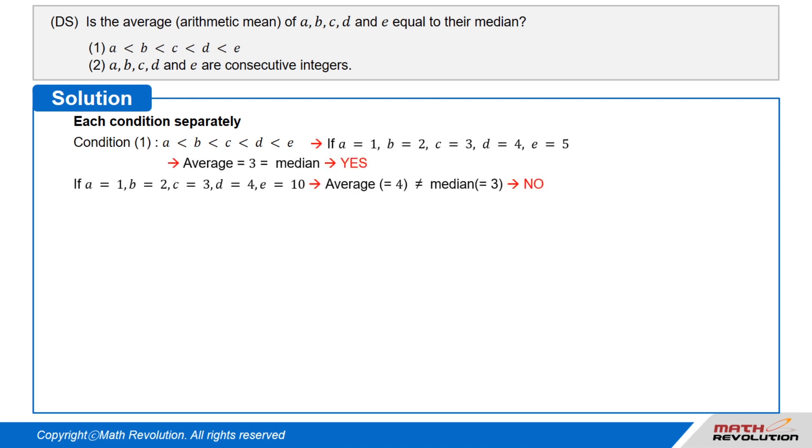If A equals 1, B equals 2, C equals 3, D equals 4, and E equals 5, then their average or arithmetic mean is 3, which is equal to their median. So we get yes.